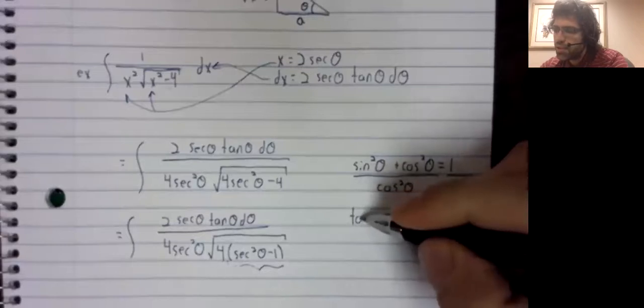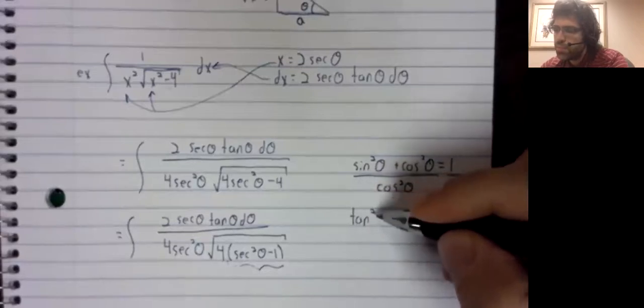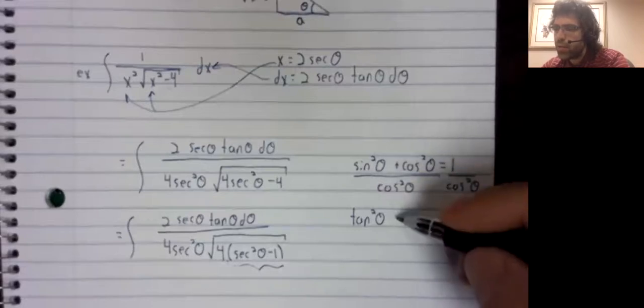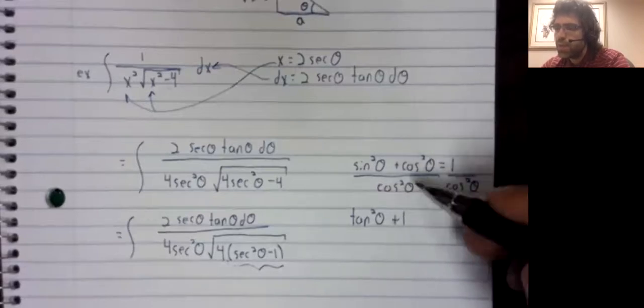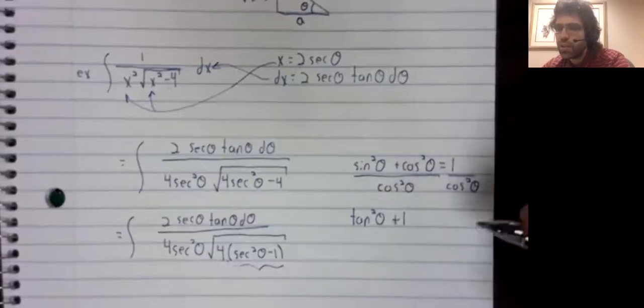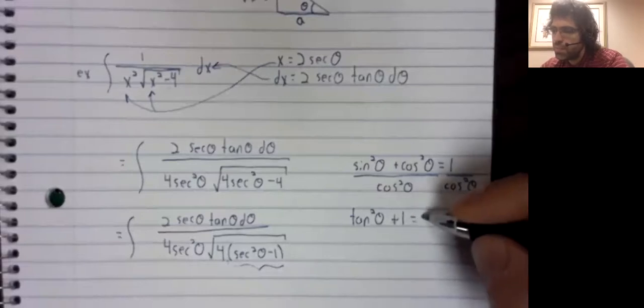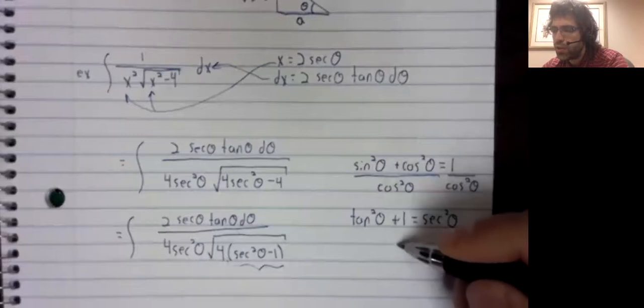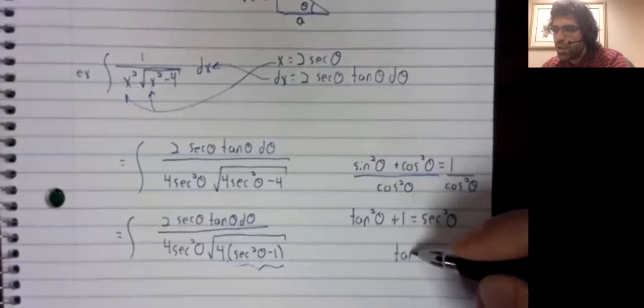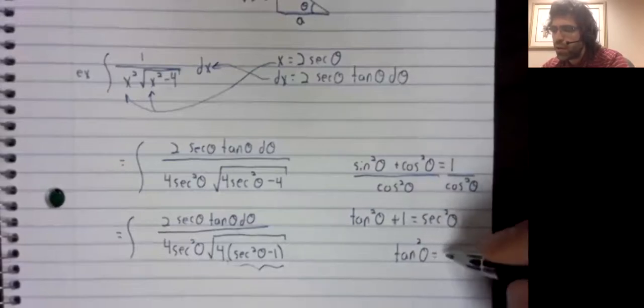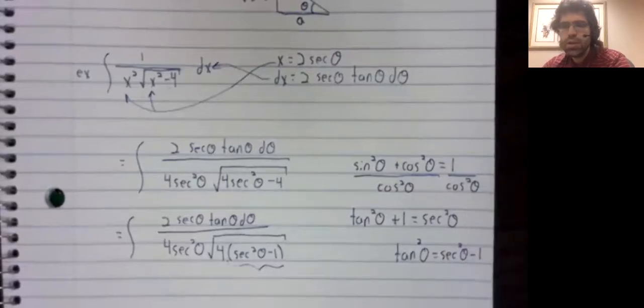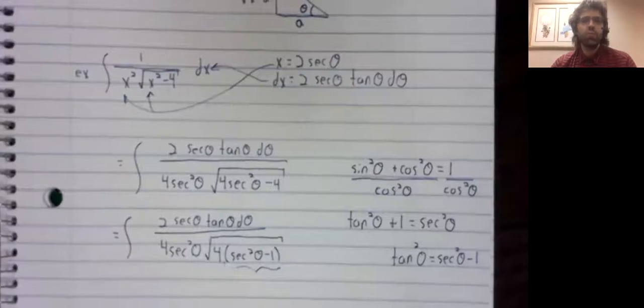That gives you the tangent squared. Thus one equals the secant squared. Ergo, the tangent squared is the secant squared minus one.